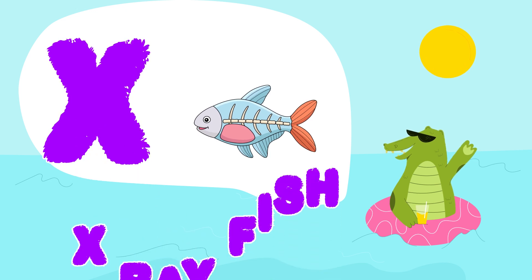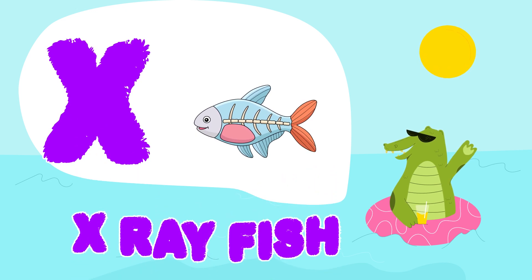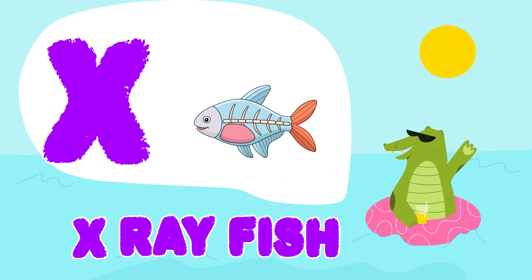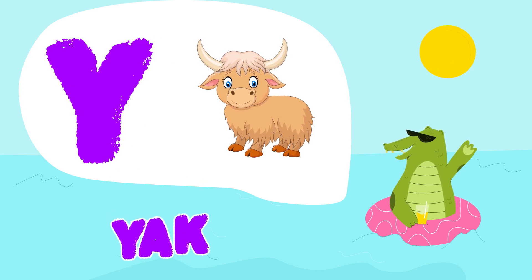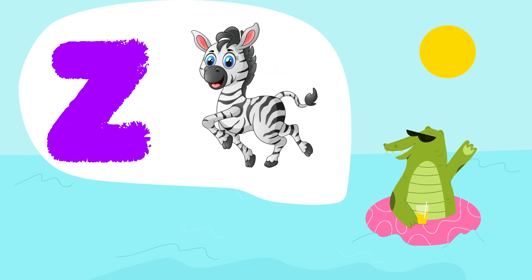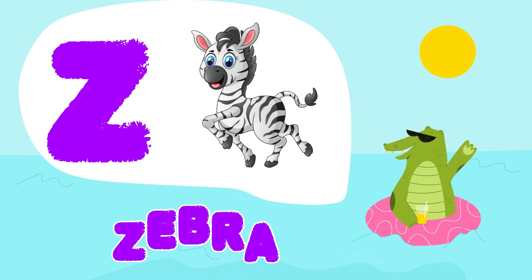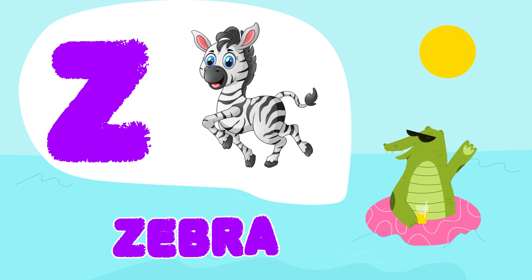X is for X-ray fish. X-X-X-ray fish. X-X-ray fish. Y is for Yak. Y-Y-Yak. Y-Yak. Z is for Zebra. Z-Z-Zebra. Z-Z-Zebra. Z-Zebra.